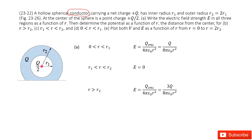Now we need to write down the electric field in all three regions. The first region is where R is larger than zero and smaller than R1. We can draw a Gaussian surface, and the enclosed charge is just Q over 2. Using Gauss's law and inputting Q over 2 as the enclosed charge, you get a function that looks like that.